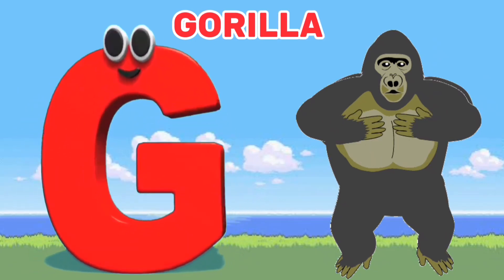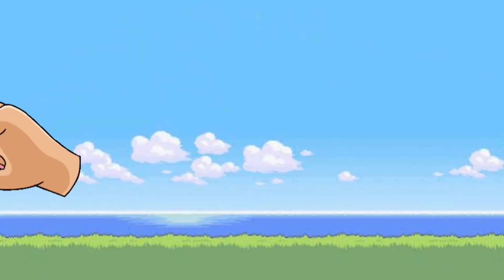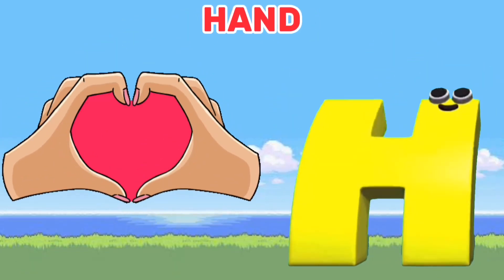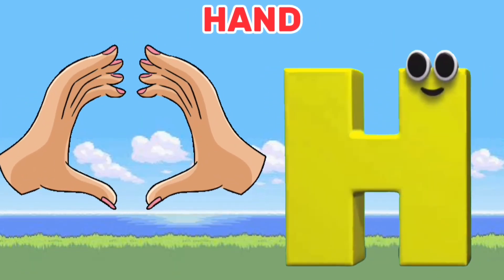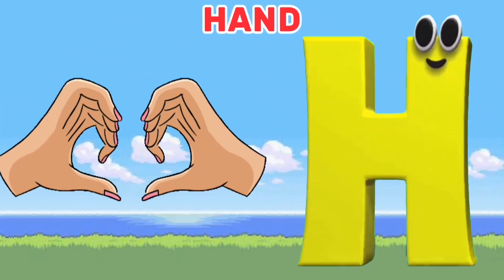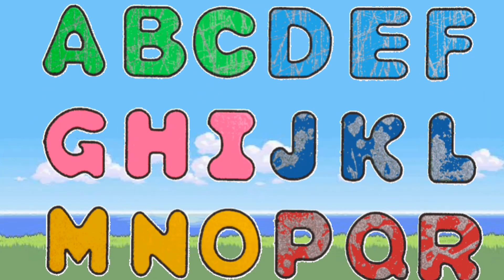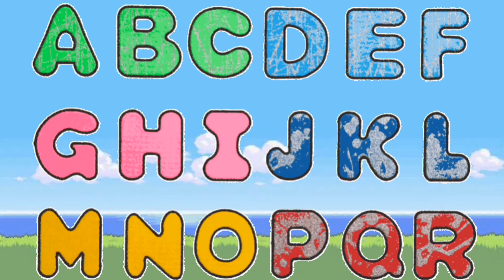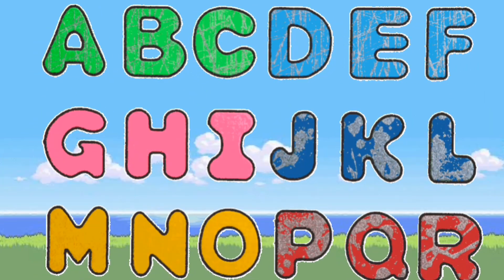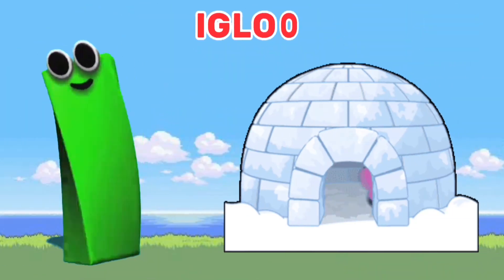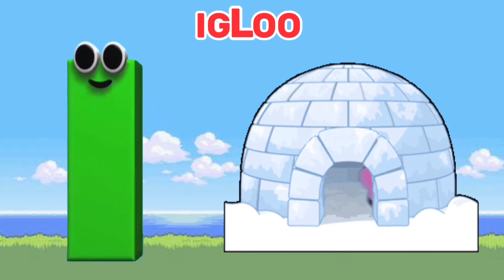G is for Gorilla. G, G. Gorilla. H is for Hand. H, H. It's the letters of the alphabet.